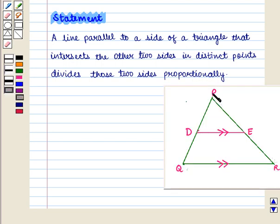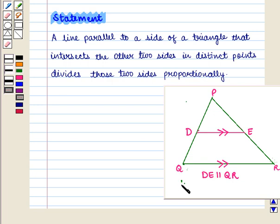That is, in the given triangle PQR, it is given that DE is parallel to QR, then PD upon DQ will be equal to PE upon ER.